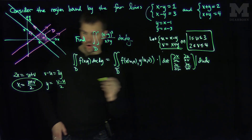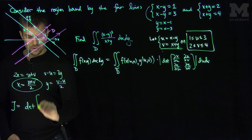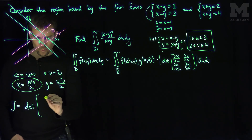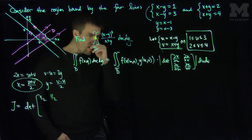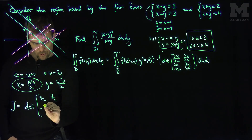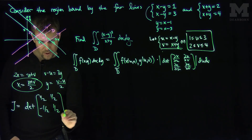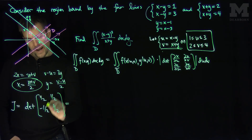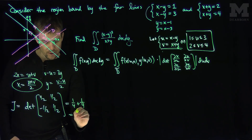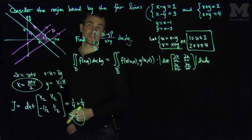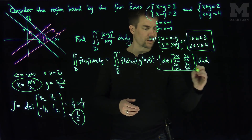Now we can compute the Jacobian. It's the determinant of the matrix with entries ∂x/∂u = 1/2, ∂x/∂v = 1/2, ∂y/∂u = -1/2, and ∂y/∂v = 1/2. The determinant gives (1/4) minus (-1/4), which equals 1/2. So our Jacobian is exactly one-half — a constant, which is a consequence of this being a linear transformation.